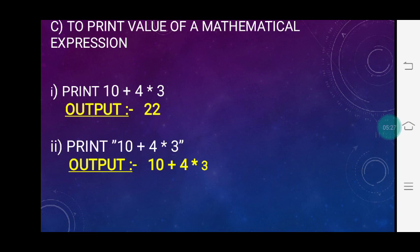To print the value of a mathematical expression: print 10 + 4 * 3 — this is a mathematical expression, so it will print 22. Next example: print "10 + 4 * 3" — whatever is written in double quotation marks will display on the output screen as-is. The mathematical expression will not be solved because double quotation marks are used. Any expression within quotes will be printed as a message, so you will get the output: 10 + 4 * 3 as it is.